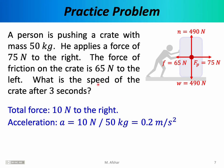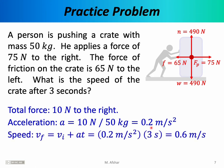The question asks for the speed of the crate after three seconds. We have a constant acceleration of 0.2 meters per second squared, which prompts us to use the kinematic equations from chapters 2 and 4. Using v_final = v_initial + at, with v_initial = 0, a = 0.2, and t = 3 seconds, we find the final speed of the crate is 0.6 meters per second.